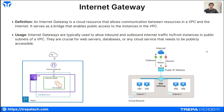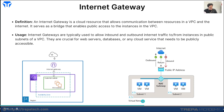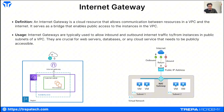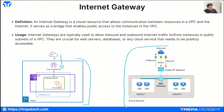An internet gateway is a broad term for a cloud resource that allows your cloud-based resources to reach the internet. Think of it like a router in your on-prem environment. The internet gateway lets resources on a virtual network — which may not have individual public IPs — send and receive internet traffic. Both AWS and Azure images show these essentially doing the same thing.